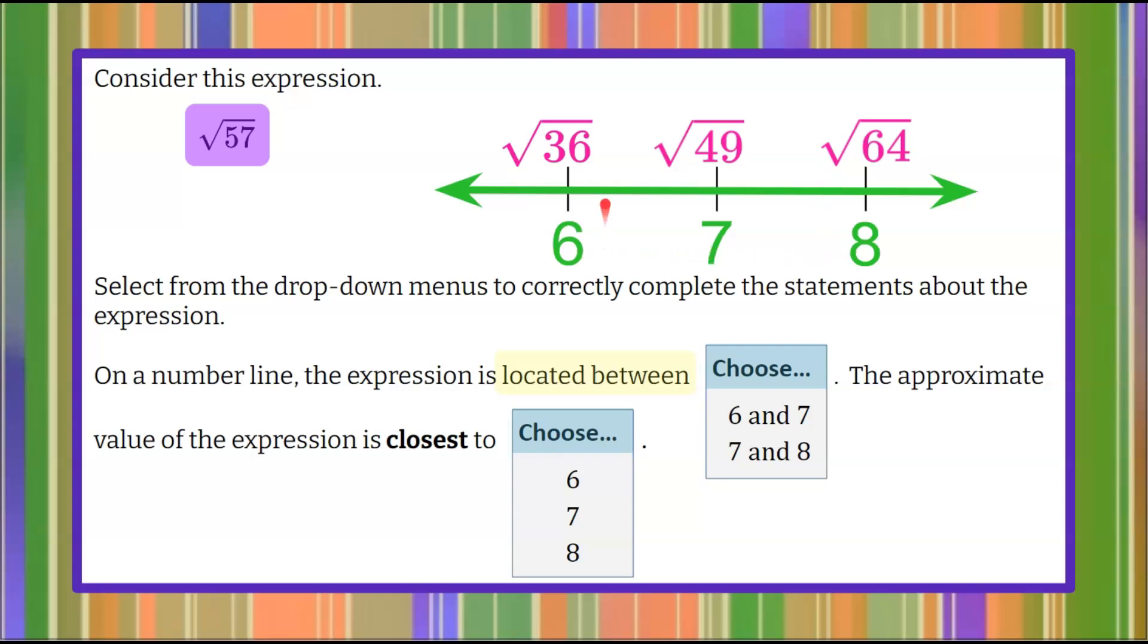So 6 squared is 36. The square root of 36 is 6. Now we want to place the square root of 57 on this number line to complete the statement. So we can see that the square root of 57 is going to lie between the square root of 49 and the square root of 64 telling us that the square root of 57 is between the two integer values 7 and 8 giving us 7 and 8 as a solution.